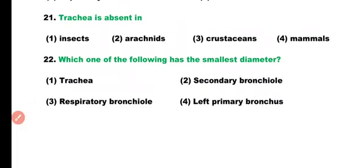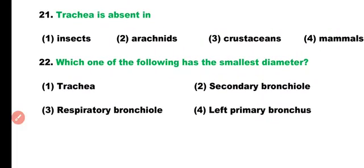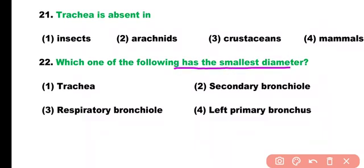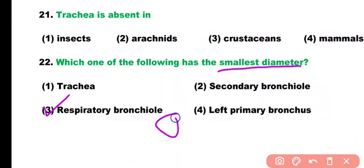Question number 22. Which one of the following has the smallest diameter: trachea, secondary bronchioles, respiratory bronchioles, or left primary bronchus? Correct answer is option 3. Respiratory bronchioles have the smallest diameter, which is almost 0.5 mm.